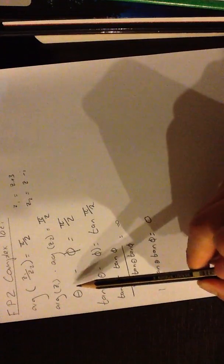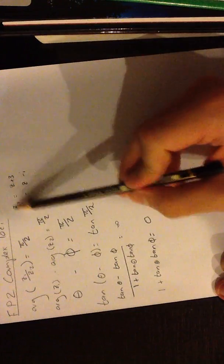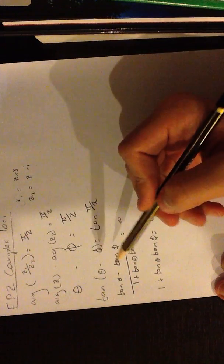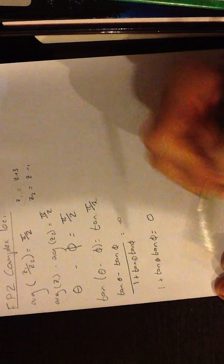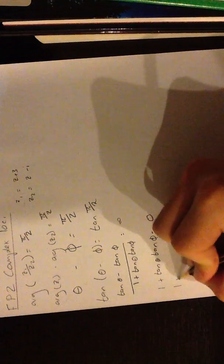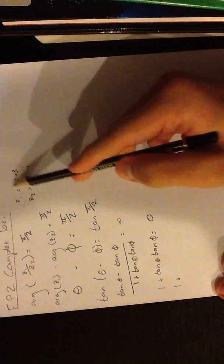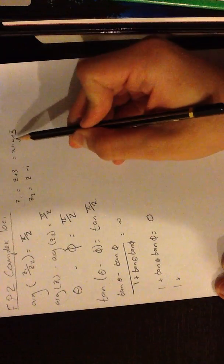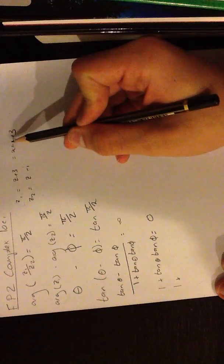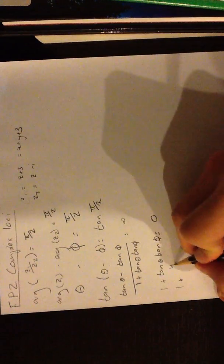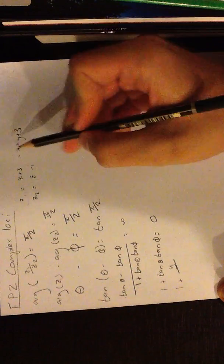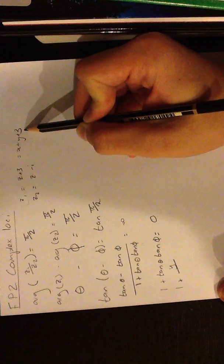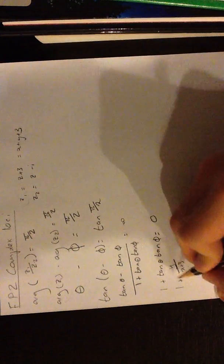Now, we said theta was the argument of z1, which is z plus 3. If we take tan of the argument of z1, this is defined as the y component of the complex number — we can rewrite this as x plus iy plus 3. The y component is simply y; there are no other imaginary parts apart from y. So we say the y component over the real component. The real component is x plus 3, so you put it over that.